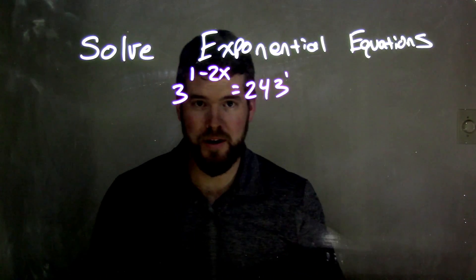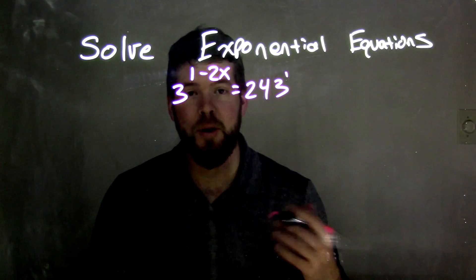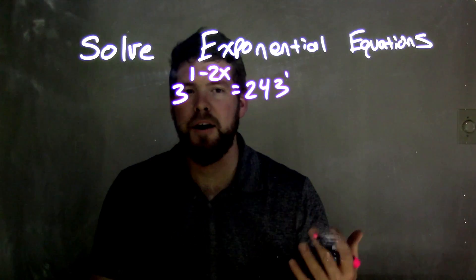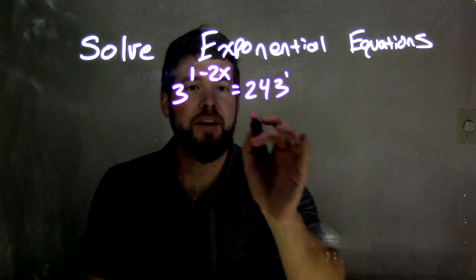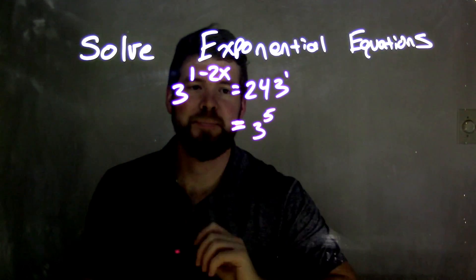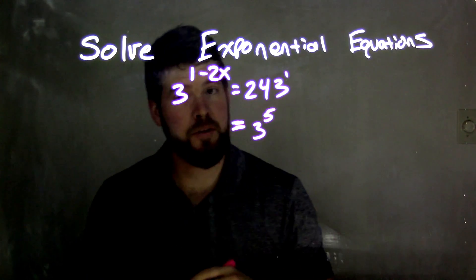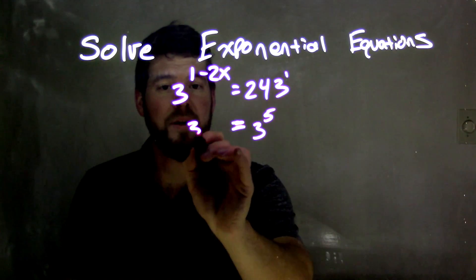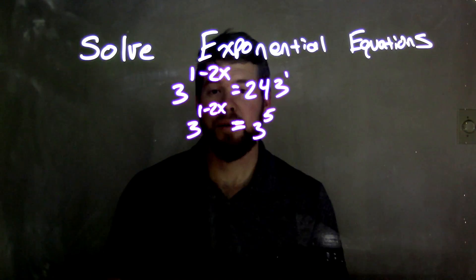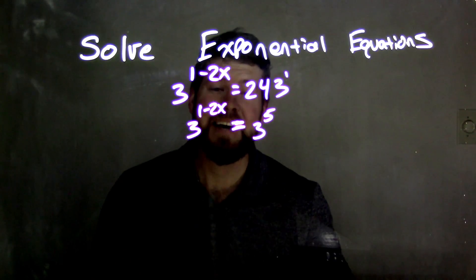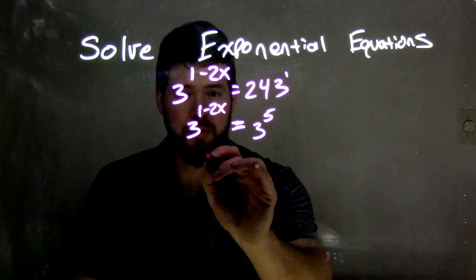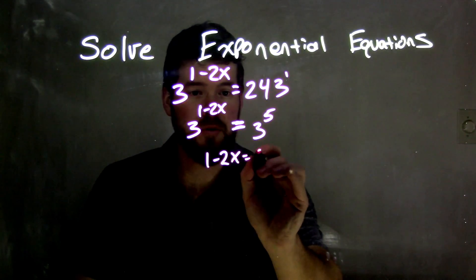One thing to know about 243 — and a quick look-up or familiarity with the numbers will confirm — is that 243 is 3 to the 5th power. So we rewrite the right side as 3 to the 5th, and leave the left side as 3 to the 1 minus 2x. Now we have 3 to the 1 minus 2x equals 3 to the 5th, so we can set the exponents equal: 1 minus 2x equals 5.